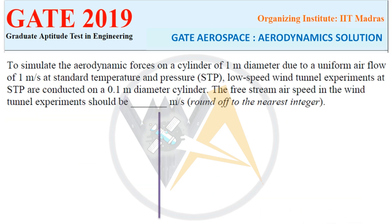Second question: to simulate the aerodynamic forces on a cylinder of 1 meter diameter due to a uniform air flow of 1 meter per second at standard temperature and pressure, low-speed wind tunnel experiments at the same STP are conducted on a 0.1 meter diameter cylinder. The free stream air speed in the wind tunnel experiment should be how many meters per second, rounded to the nearest integer?